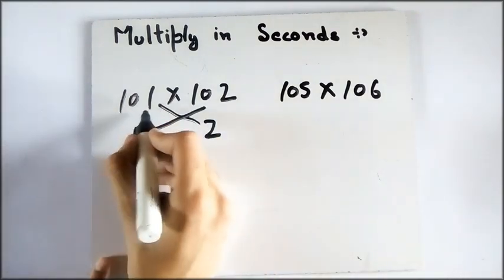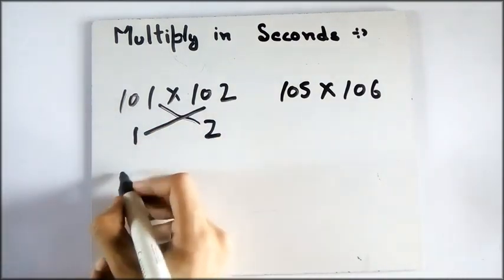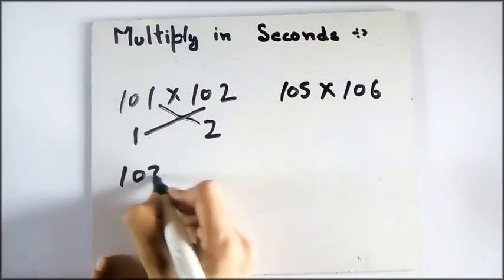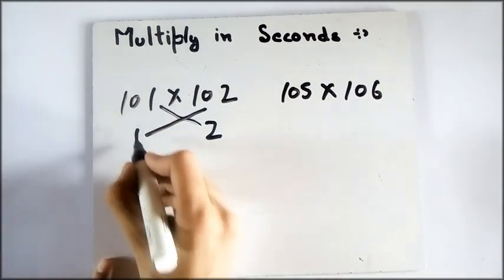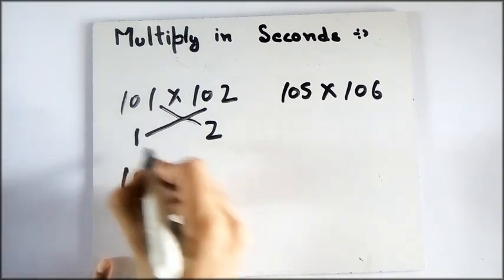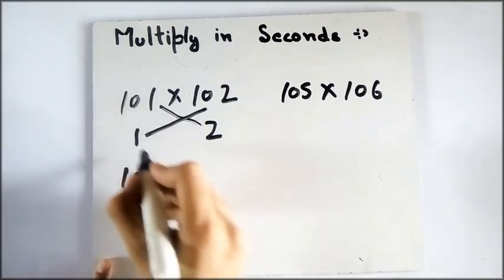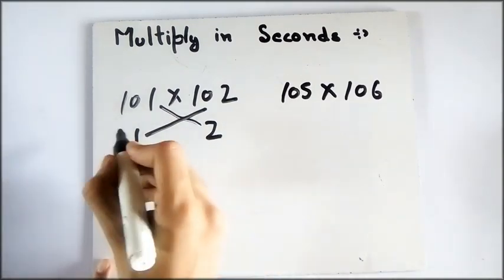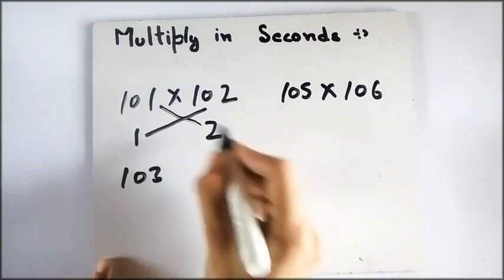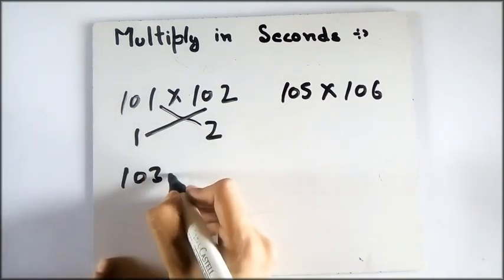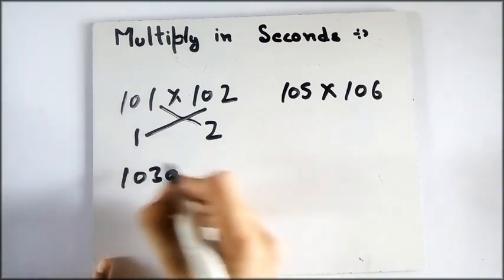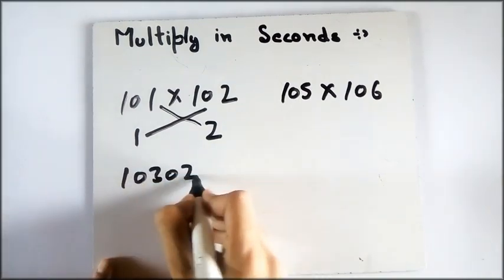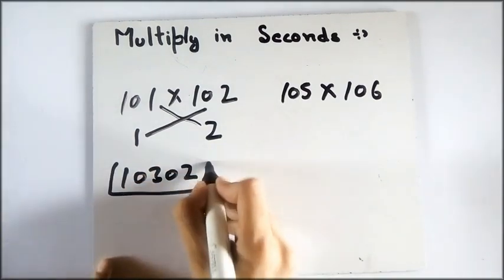For example, 101 plus 2 is 103, and multiply these two numbers: 1 times 2 is 2. Since it is a one's digit, we will add a 0 and then write that. So this is your answer.